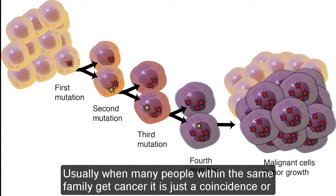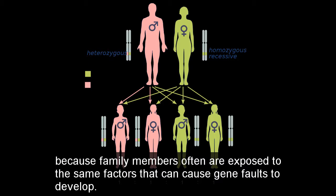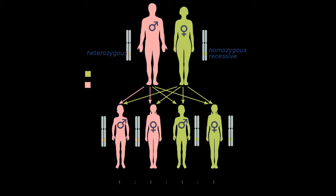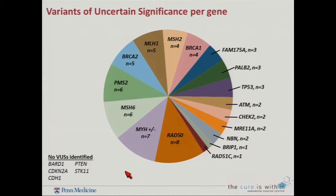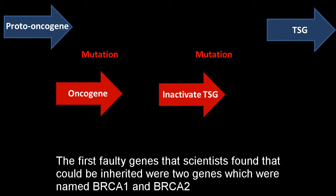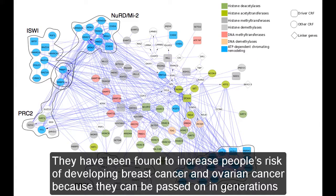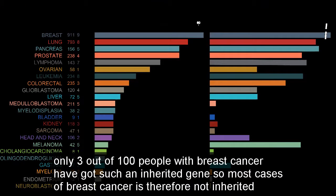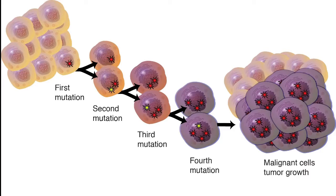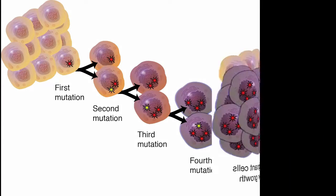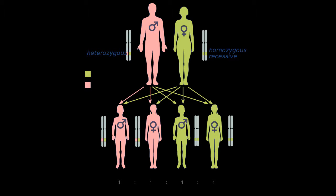Usually when many people within the same family get cancer it is just a coincidence, or because family members often are exposed to the same factors that can cause gene faults to develop. So it is rare, but it is possible, to inherit a gene fault from our parents that can increase our risk of developing cancer. Researchers are working to find genes that increase people's risk of developing cancer. The first faulty genes that scientists found that could be inherited were two genes named BRCA1 and BRCA2. These two genes have been found to increase people's risk of developing breast cancer and ovarian cancer because they can be passed on in generations. Still, only 3 out of 100 people with breast cancer have got such an inherited gene, so most cases of breast cancer are therefore not inherited. Researchers have also found other faulty genes that can be inherited and increase our risk of getting cancer, and more such genes are likely to be found in the future. However, most cancers develop because of gene faults that occur due to chance and our environment, and a combination of these factors.